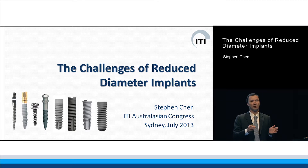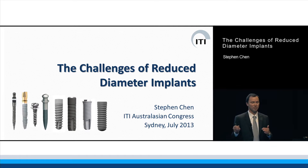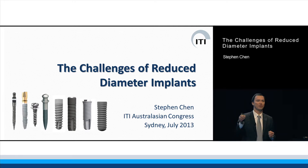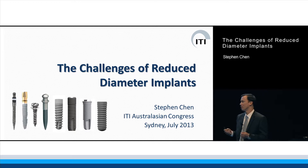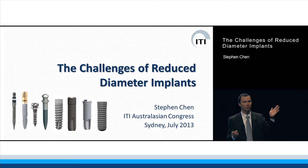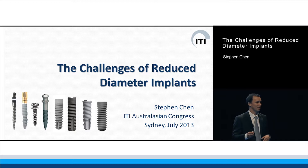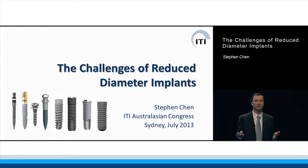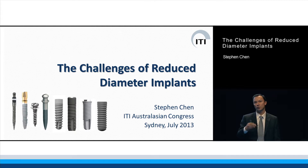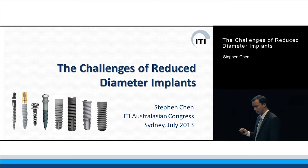We've gone from surface technology — we've gone rough, and then we've gone back to micro-rough from smooth. We've gone transmucosal, bone level, transmucosal, back to bone level. We've got implants with different thread designs, parallel-walled, tapered implants — all sorts of variations of different implant designs over the years.